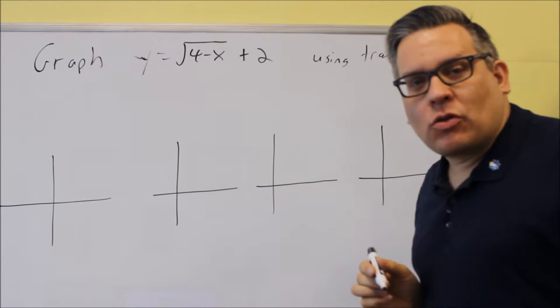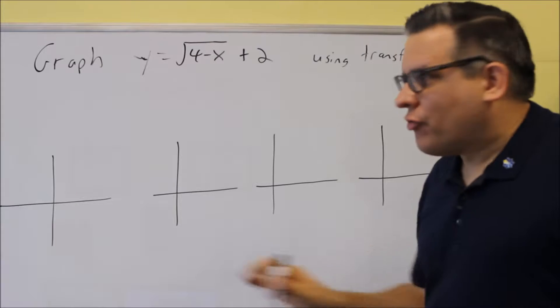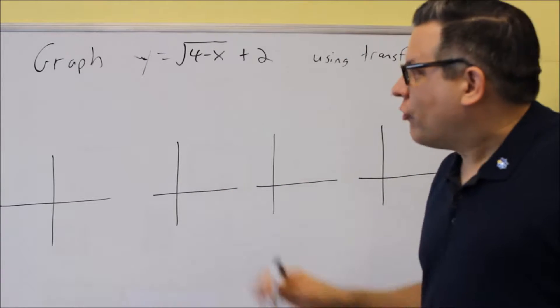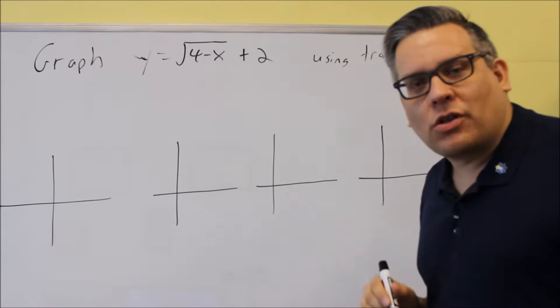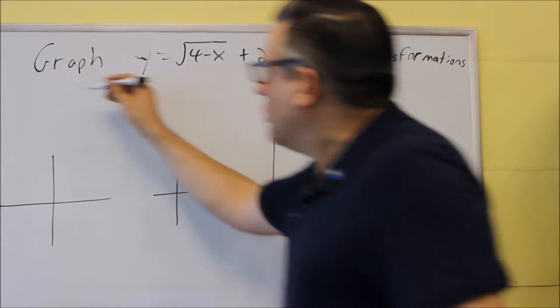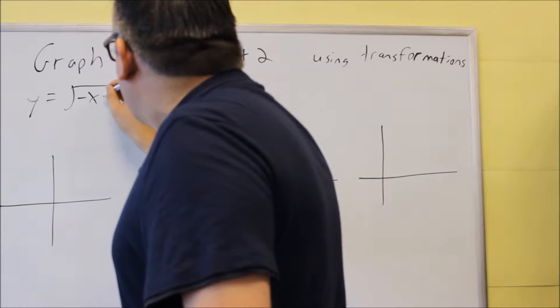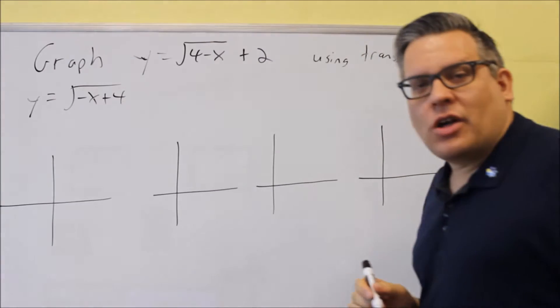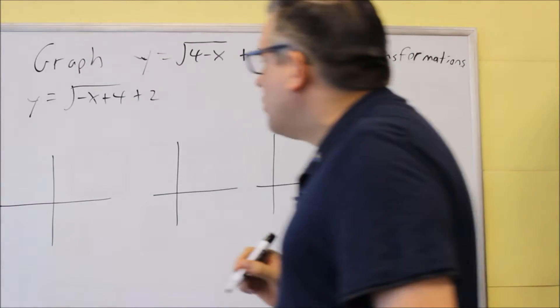Now, this, we don't have it in the right form because we've got the order switched. So, before we start doing the graphs, we first want to do a little bit of work to this to get it into the right form so we can apply the transformations. For this one, we need to first switch the order. I'm going to switch the order and write it this way as negative x plus 4. And, of course, we have the plus 2 on the outside.